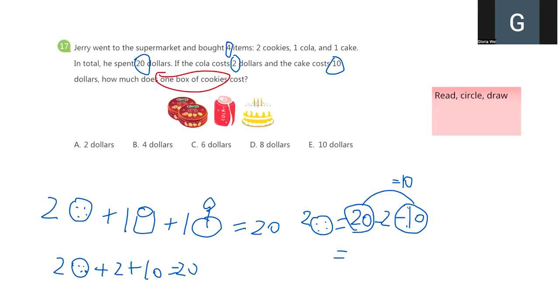So 2 boxes of cookies cost $8. Can you tell me which two same numbers add together equal to 8? 4, right? 4 plus 4 equals 8. So for this question, we choose B.